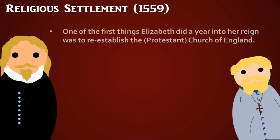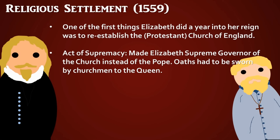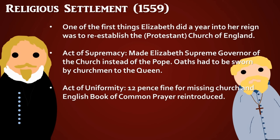Religious policy is very important for Elizabeth. One of the first things she did when she came to the throne in 1558 was to reinstate the Protestant church, which Mary had abolished. This was done through two acts known together as the religious settlement. The first was the Act of Supremacy, which made Elizabeth supreme governor of the church rather than supreme head — because she was a woman — meaning every churchman had to swear an oath to the queen, which all but one refused, so she lost all her Catholic bishops.